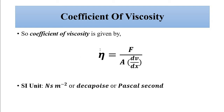The coefficient of viscosity is given as eta equals F divided by A times dv by dx. This parameter is very important when it comes to Stokes Law — that is, the movement of a solid object through fluids. The SI unit of coefficient of viscosity is Newton-second per meter squared, also called decapoise or Pascal-second. This coefficient of viscosity is unique for each fluid.